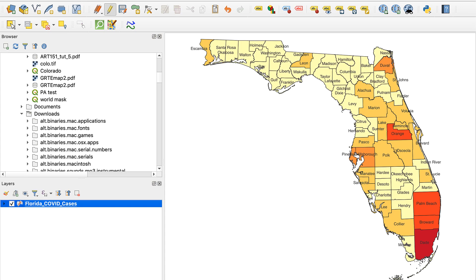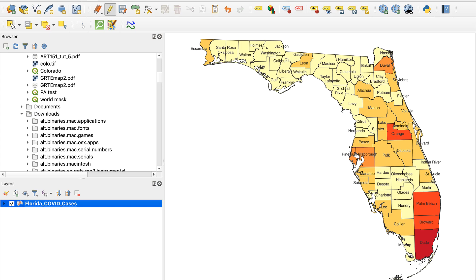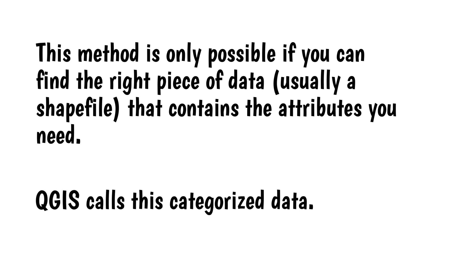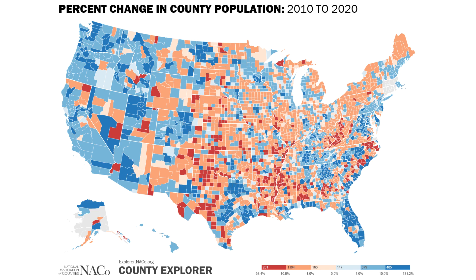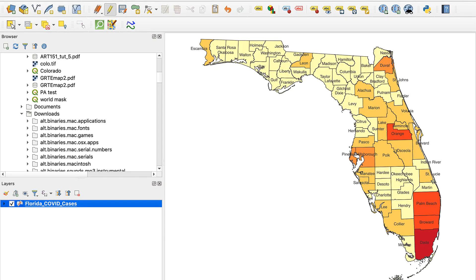Or you can use QGIS to automatically style the units according to the data. This method is only possible if you can find the right piece of data, usually a shapefile that contains the attributes you need. QGIS calls this categorized data. It's also the most practical method if your map has a lot of areas, such as a map of the US that shows every county. Since the first method is pretty straightforward, this video will focus on creating thematic maps using QGIS.